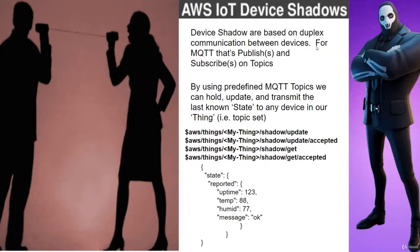Let's talk about a few concepts regarding Device Shadow State before we get into the examples. First of all, Device Shadows can be based on HTTP or MQTT. From what I've seen out in the field, 95% of the time it's MQTT, and that's what we're going to be doing here.